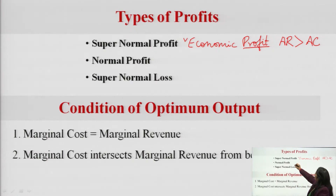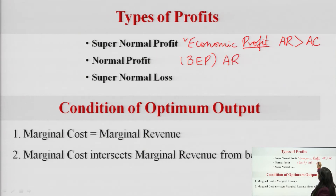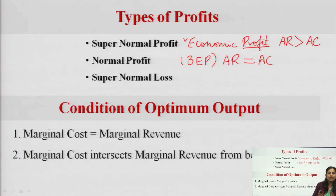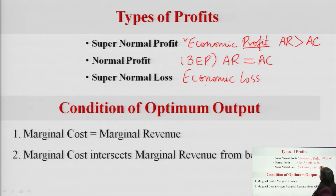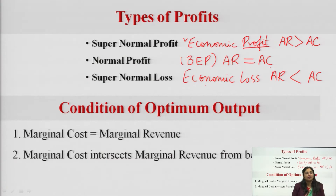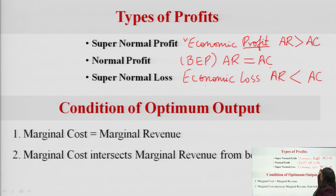Normal profit is the breakeven point — it is also called the breakeven point where average revenue and average cost are both equal. If we have a situation where average revenue equals average cost, there is actually no profit and no loss. We will say in economics it is normal profit. Super normal loss is called economic loss — the condition where average revenue is less than average cost. Per unit revenue is less than per unit cost, so there is a loss. This is called economic loss.